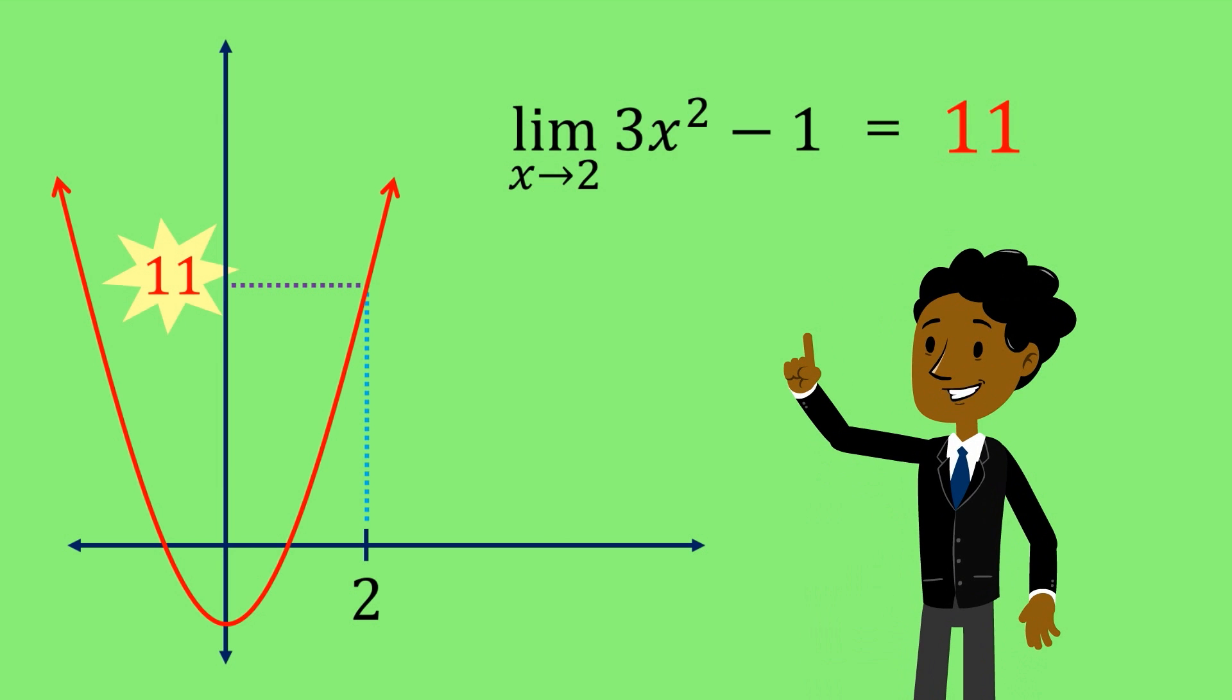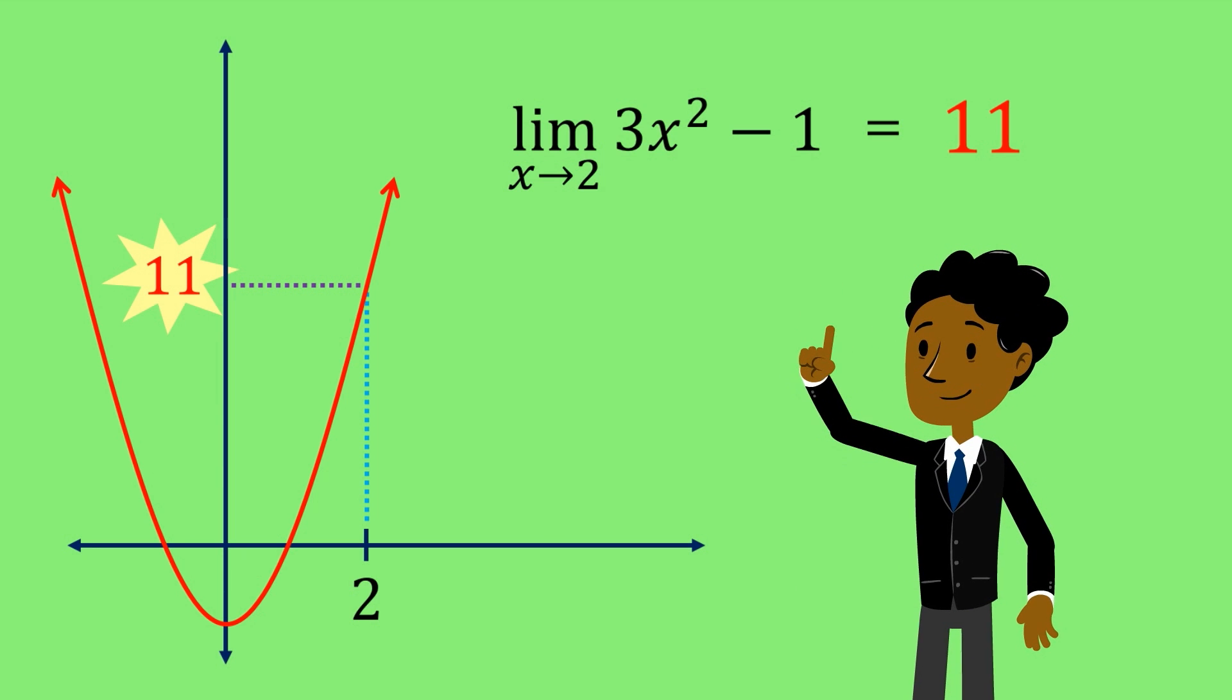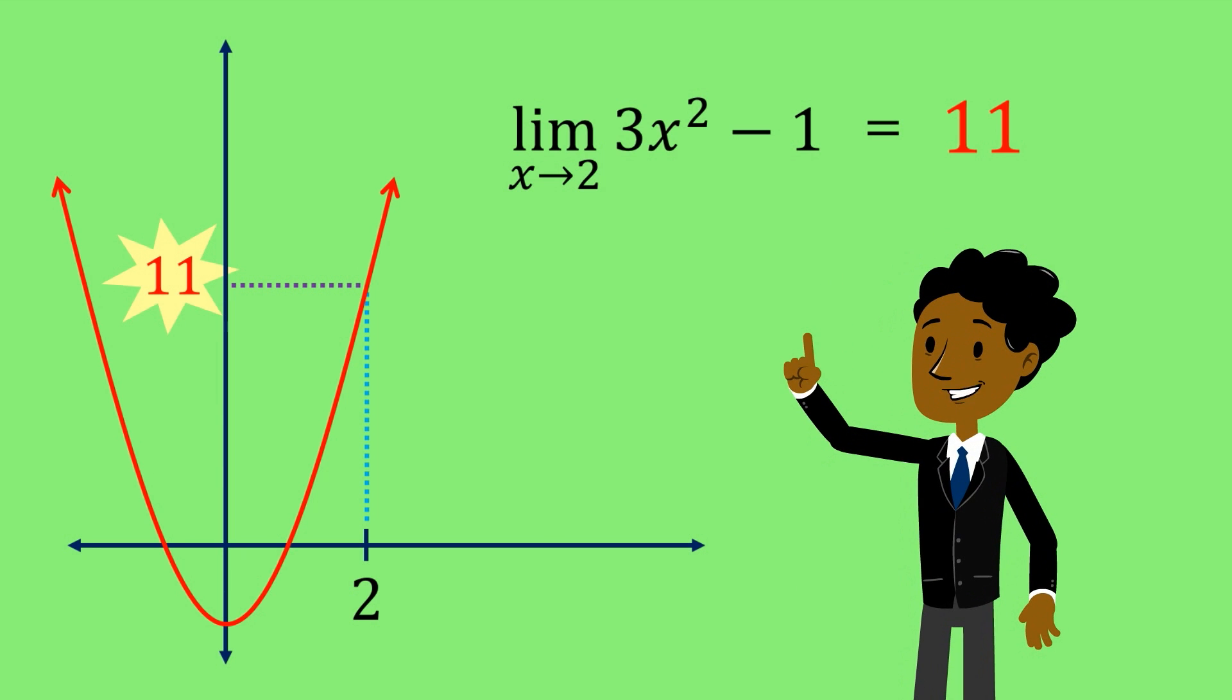Remember, what I'm really saying here is that we can get arbitrarily close to the number 11. I just have to pick values that are sufficiently close to 2 in order to do it.